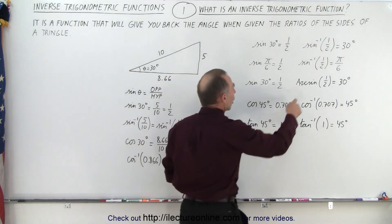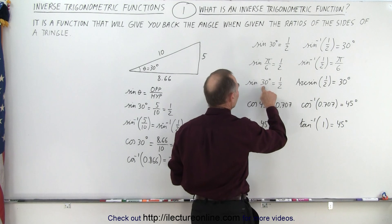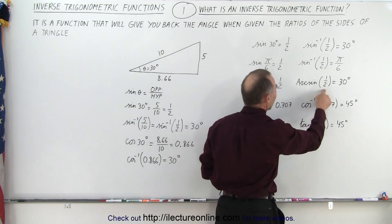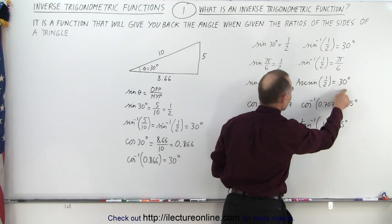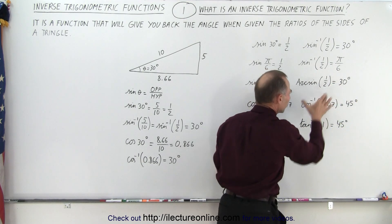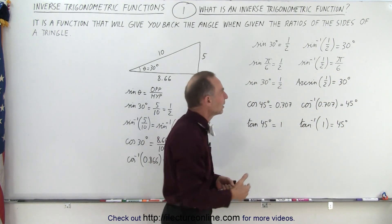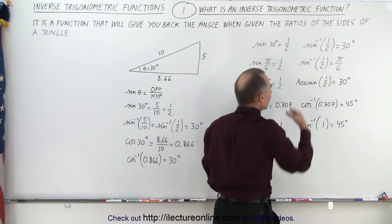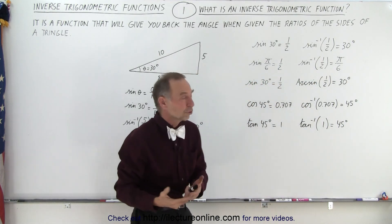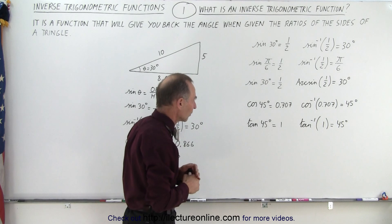We can also call it the arc sine: if the sine of 30 degrees is 1 half, the arc sine of 1 half equals 30 degrees. You'll see both notations — the arc sine, which tends to be an older notation, or the inverse sine, which is now the more common notation for the inverse trigonometric function.